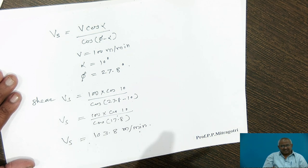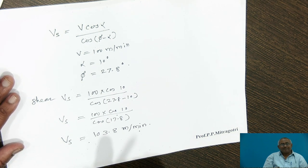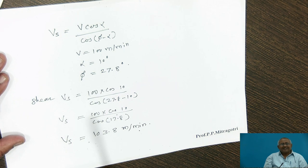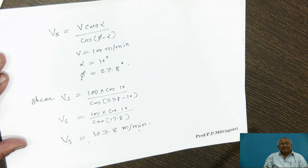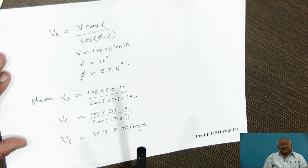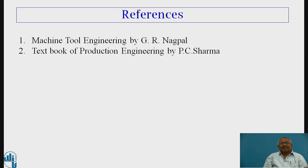From this we can establish the relationship between cutting velocity, shear velocity, and chip velocity in terms of rake angle and shear angle. One point to note is that chip velocity is always lesser than cutting velocity, while shear velocity can be lesser or greater than cutting velocity. Cutting velocity depends on various factors such as type of material to be cut, type of operation, machine condition, and whether coolant is employed. For further reading, I recommend Machine Tool Engineering and Textbook of Production Engineering by P.C. Sharma. Thank you.